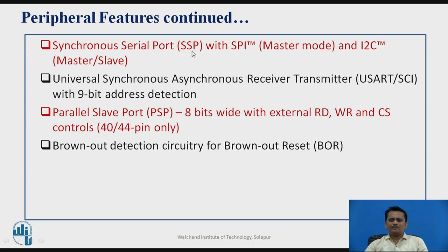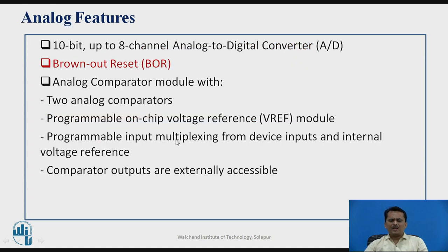The microcontroller supports both serial and parallel communication. The MSSP (Master Synchronous Serial Port) module supports SPI and I2C protocols. A USART module supports Universal Synchronous/Asynchronous Reception and Transmission. Parallel communication is also supported. Additionally, brownout detection is available — if the supply voltage drops below a threshold, it triggers a brownout reset.